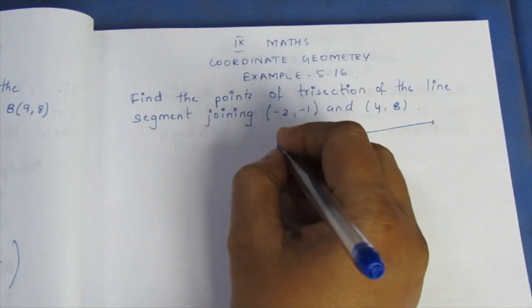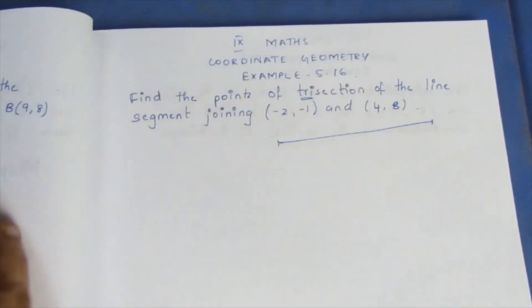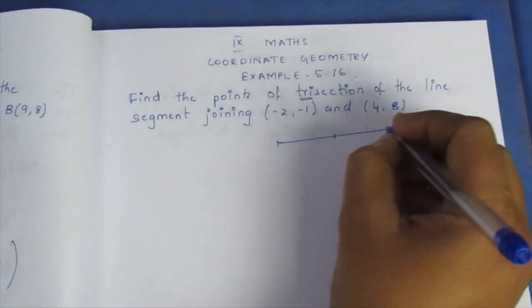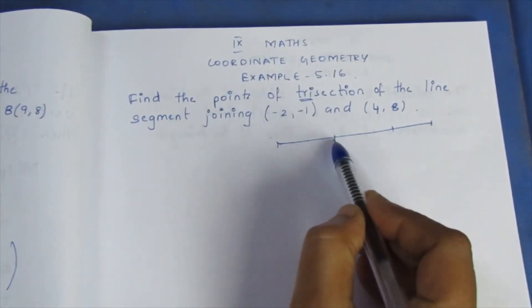Trisection means tri, which means three. Three parts, three divided. One, two points divide it into three parts: one, two, three.